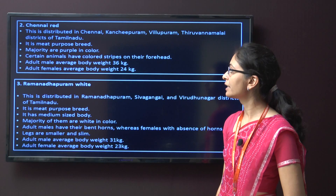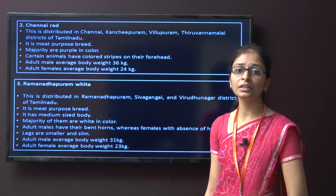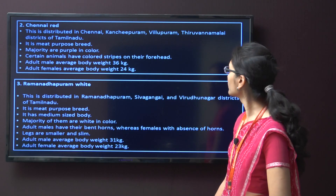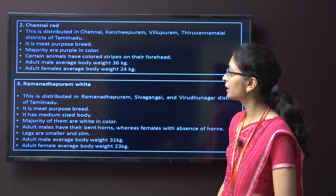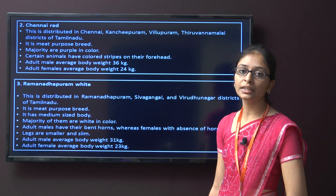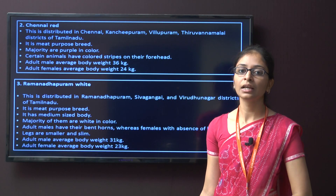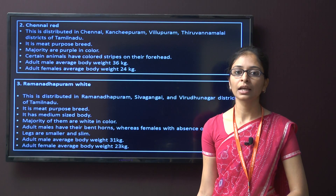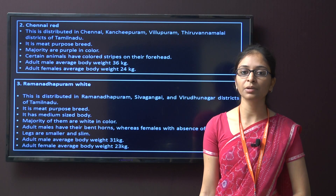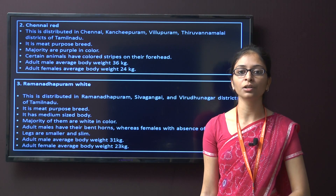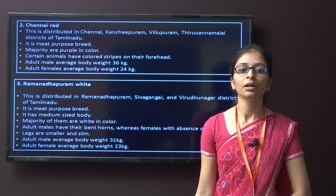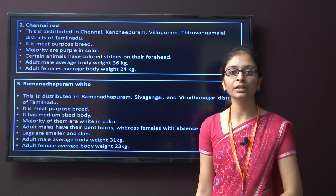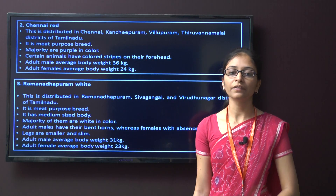The second breed is Chennai Red. It is distributed in Chennai, Kanchipuram, Villupuram, and Thiruvannamalai district of Tamil Nadu. It is also a meat purpose breed; they are purple in colour with certain animals having a colour strip on the forehead. The adult male average body weight is 36 kg and female body weight is around 23 kg.